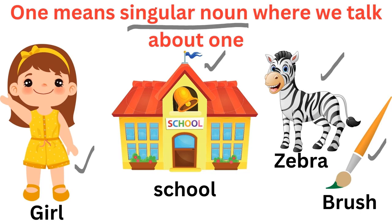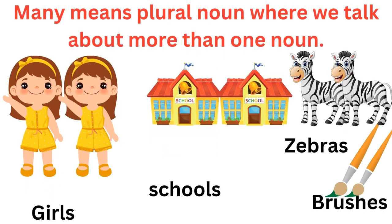So these all are singular. One girl — singular girl. One school — singular school. One zebra — singular zebra. And one brush — singular brush. So singular means one in number.